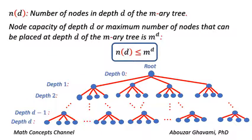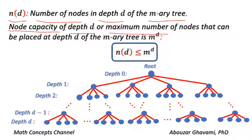Let us denote N(D) as the number of nodes in depth D of the M-ary tree. We show that the node capacity of depth D — that is, the maximum number of nodes that can be placed at depth D of the M-ary tree — is M to the power of D. In other words, we show that N(D) is less than or equal to M to the power of D.